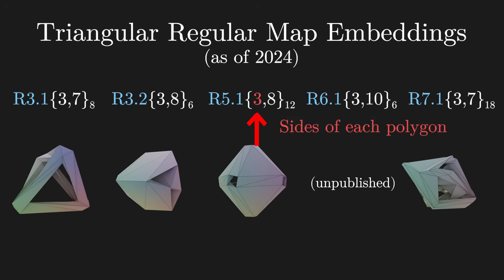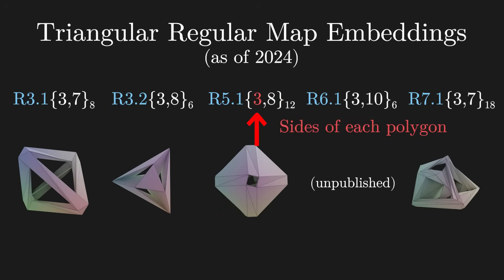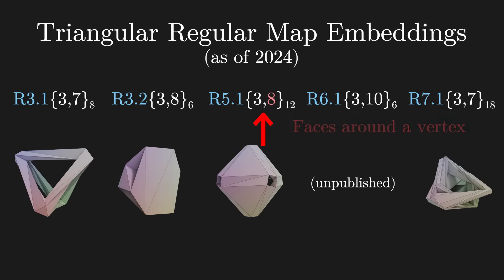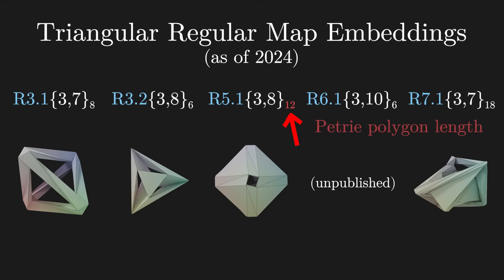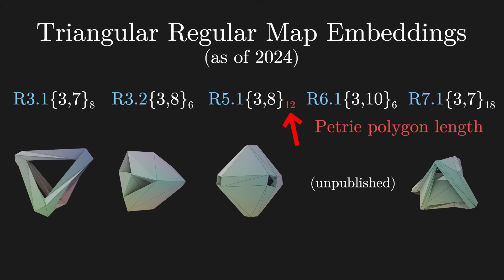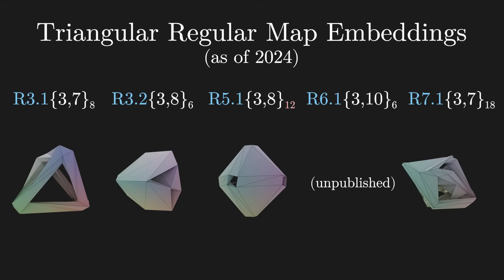And this is a Schlafli symbol. The first number is the number of sides of each polygon, always three for triangles. The second number is the number of faces that meet at each vertex, and the subscript is the length of the graph's Petrie polygon, which isn't really super important for this.